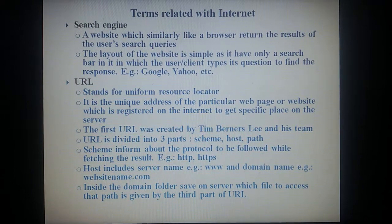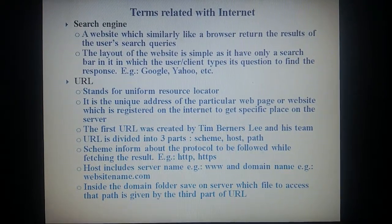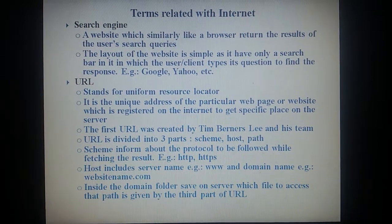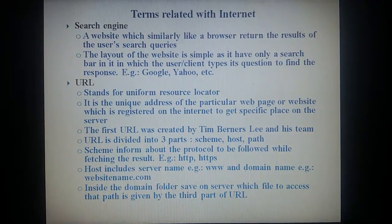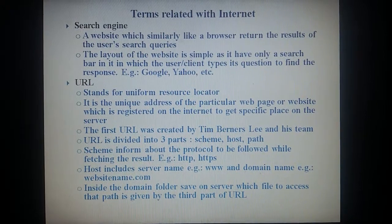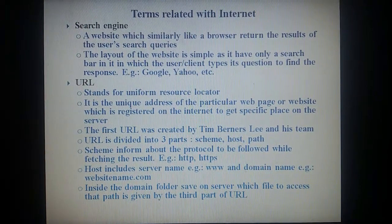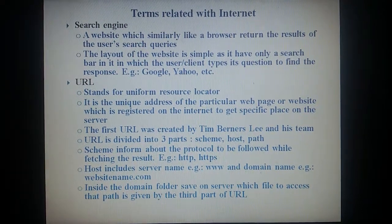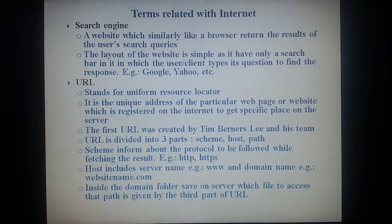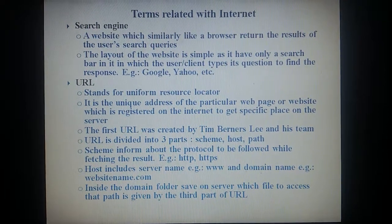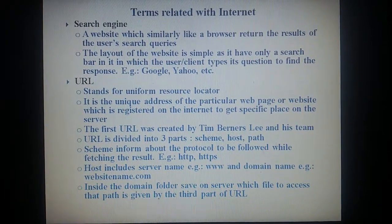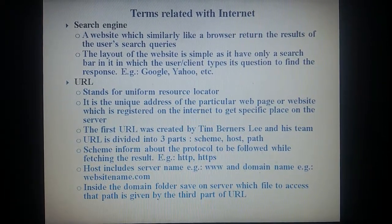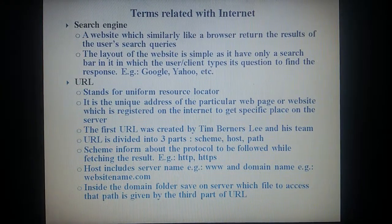URL is divided into three parts: Scheme, Host and Path. Scheme options inform about the protocol to be followed while fetching the results, like HTTP and HTTPS. Host includes server name, e.g. www, and domain name, e.g. websitename.com. Inside the domain folder saved on the server, which file to access — that path is given by the third part of URL.